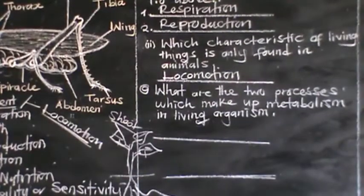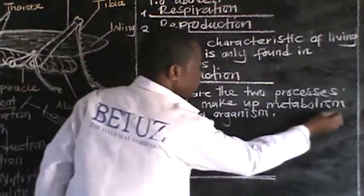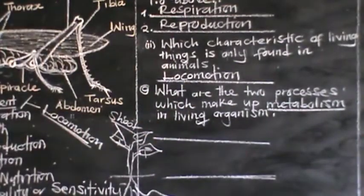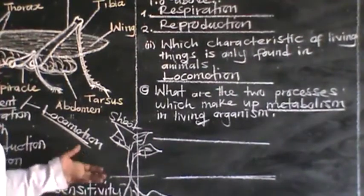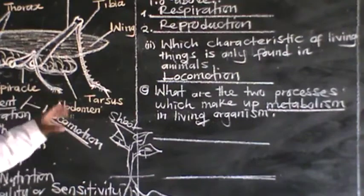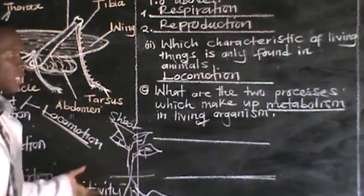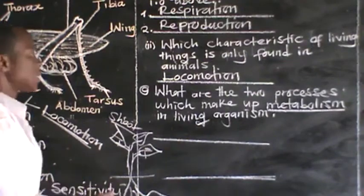Then we have question C. It says: what are the two processes which make up metabolism in living organisms? Metabolism is the sum total of all chemical reactions that take place within a cell. These chemical reactions are in two types — those which build up, and those which break down.